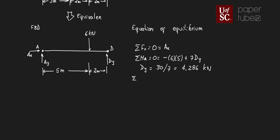Now we do the sum of forces in Y equal to zero. We have AY, the 6 kN force going down (minus 6), and DY which is 4.286. So AY equals 6 minus 4.286, giving us 1.714 kilonewtons. These are intermediate calculations and I'm keeping four significant figures throughout.